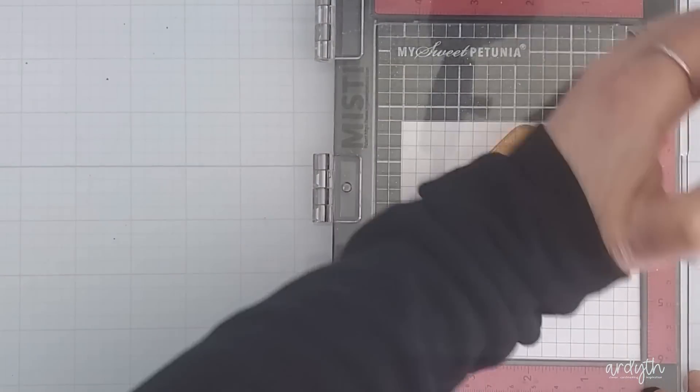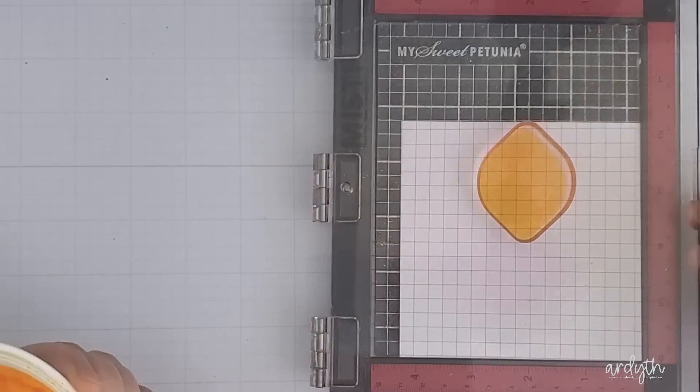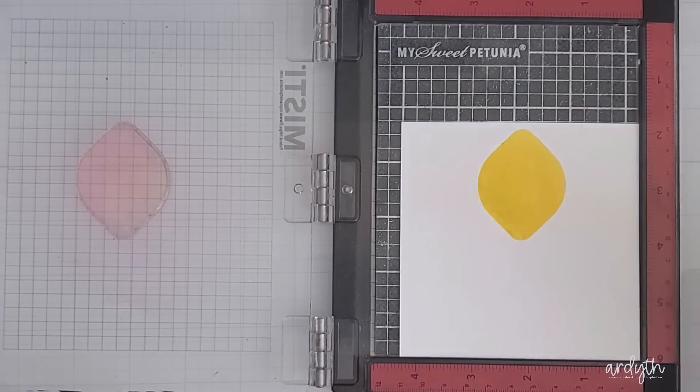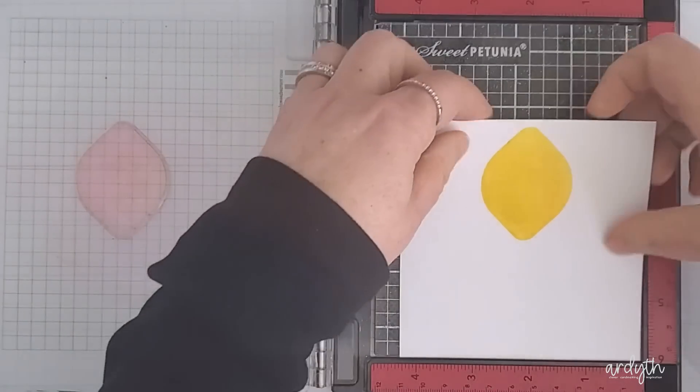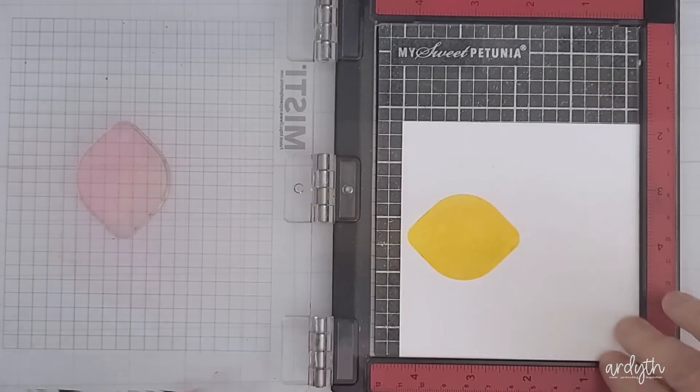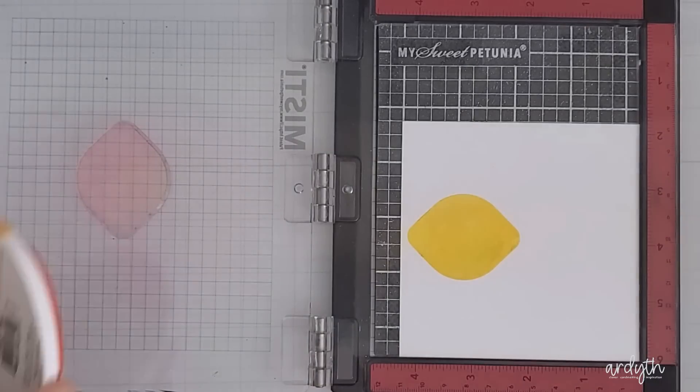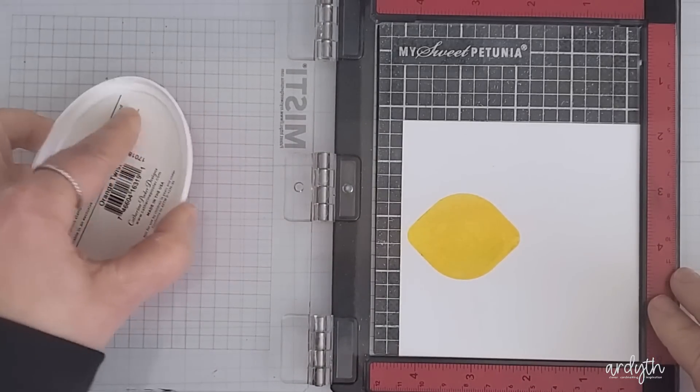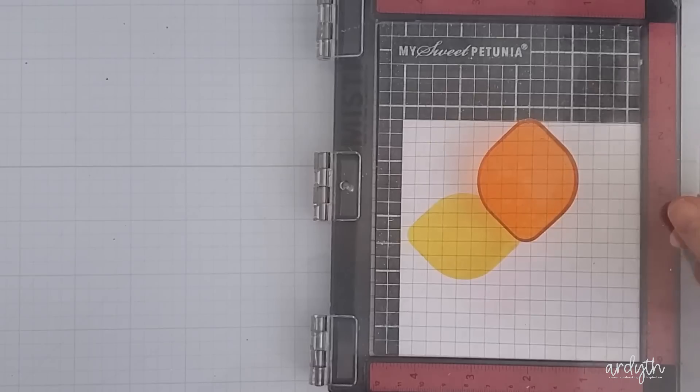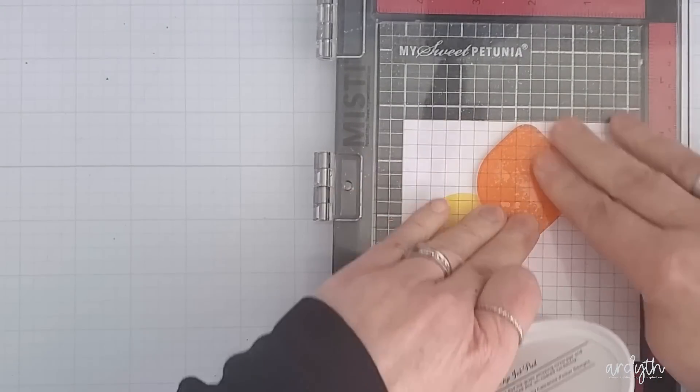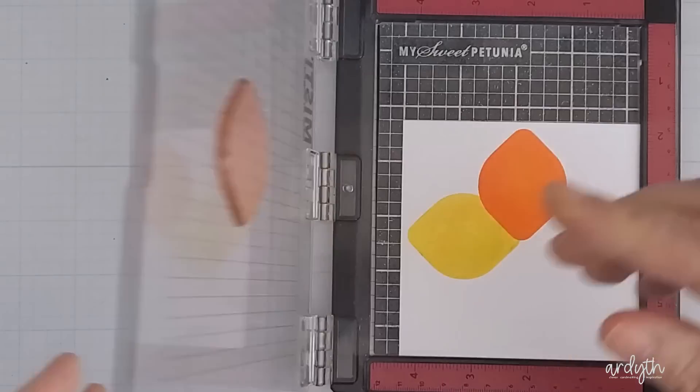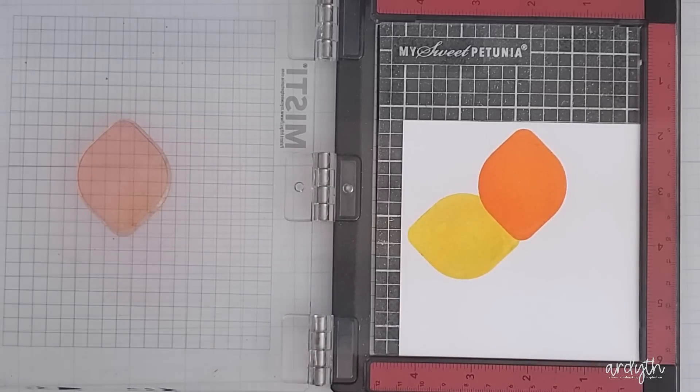I grab my first color of ink which is Limoncello and I stamp the image onto the cardstock. Then I turn my cardstock 90 degrees to stamp the next color. I'm using an 8 color rainbow and I'm skipping colors since I'll get 4 in this round of stamping by turning the cardstock 4 times. My next color is Orange Twist and I'm not even cleaning between stamping at this point since these are both warm colors.